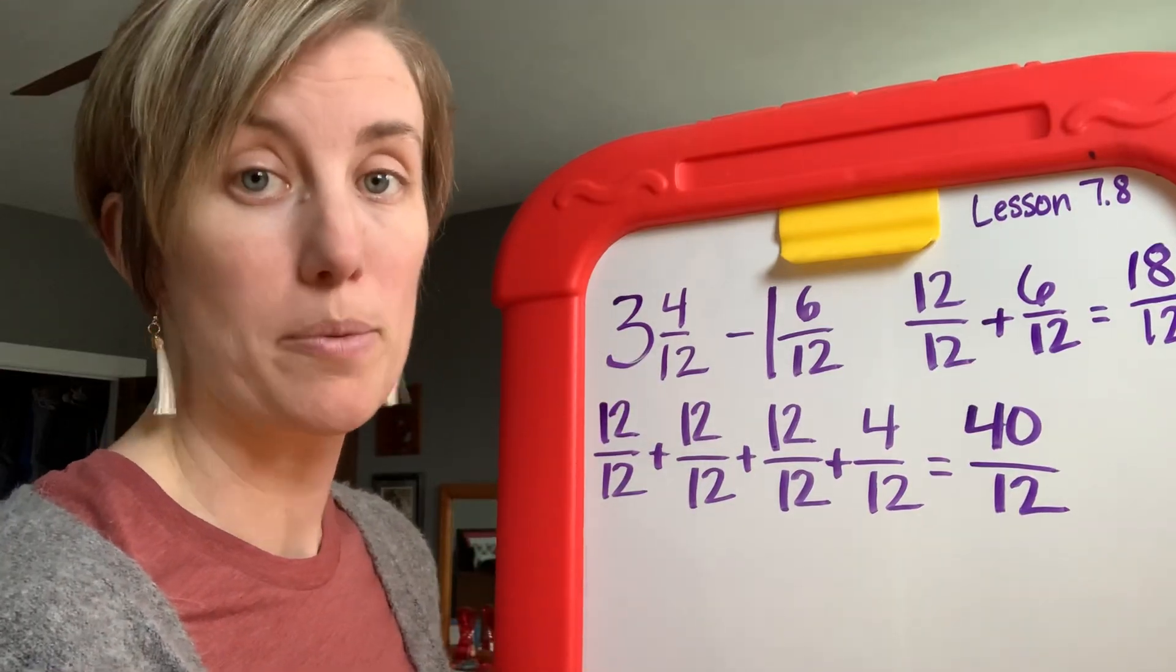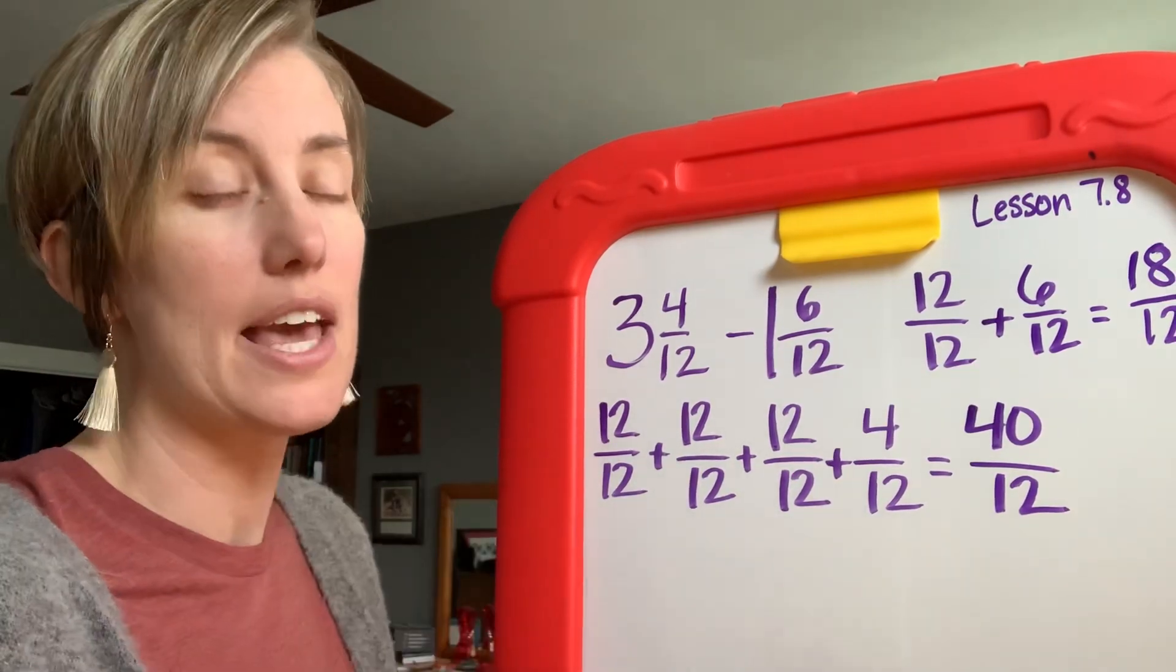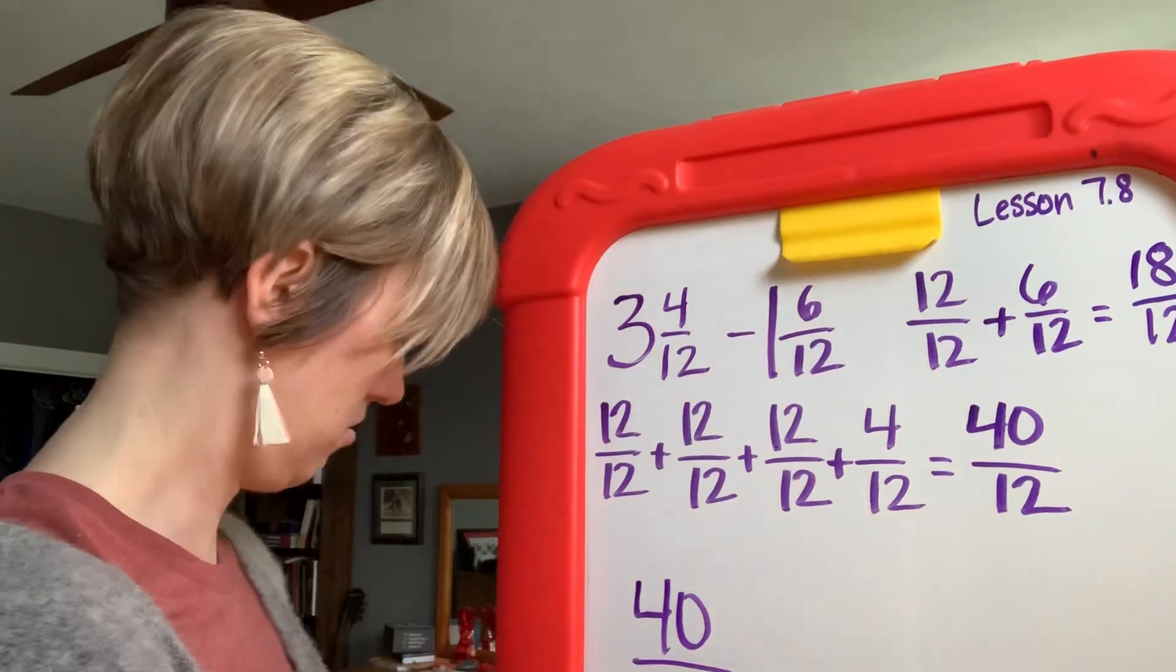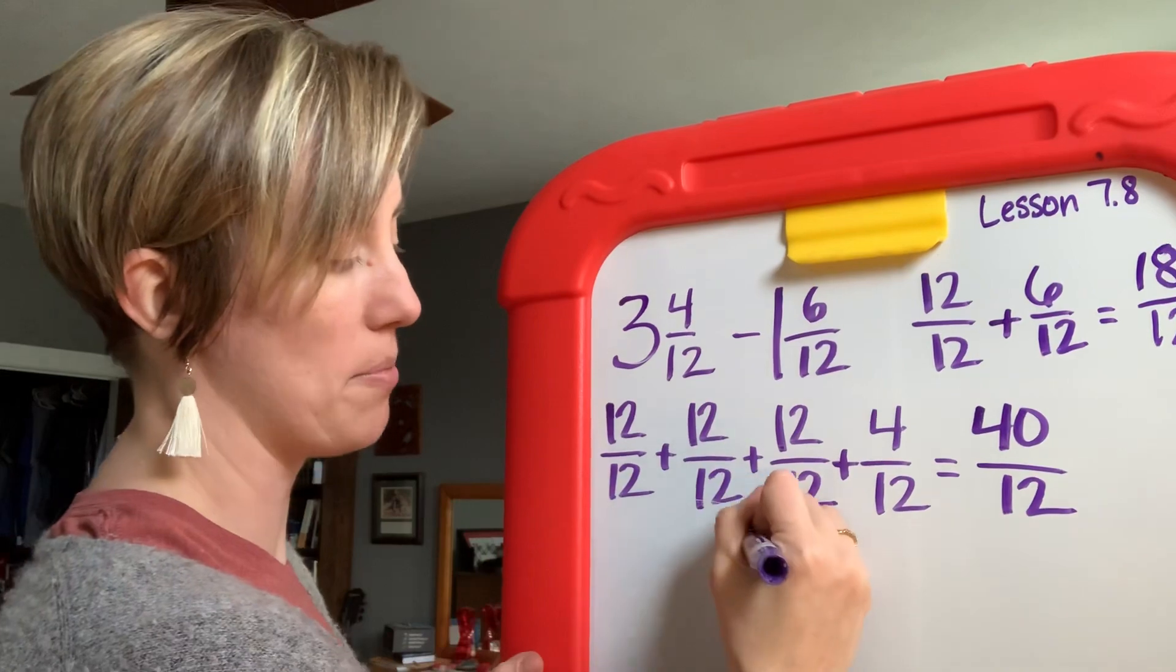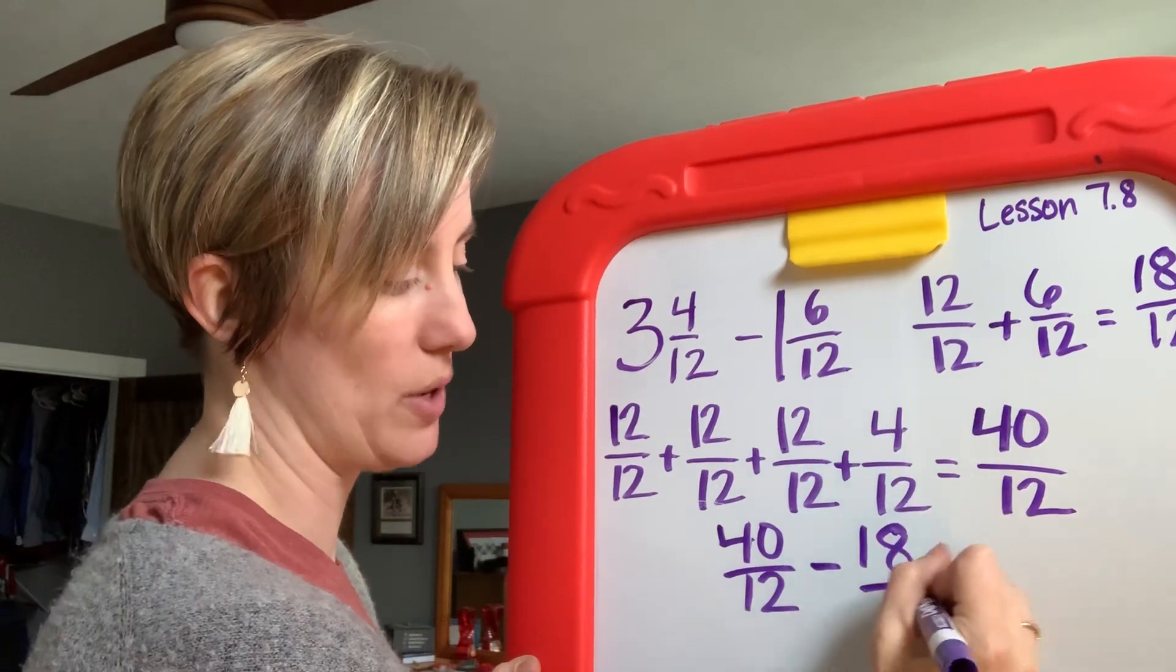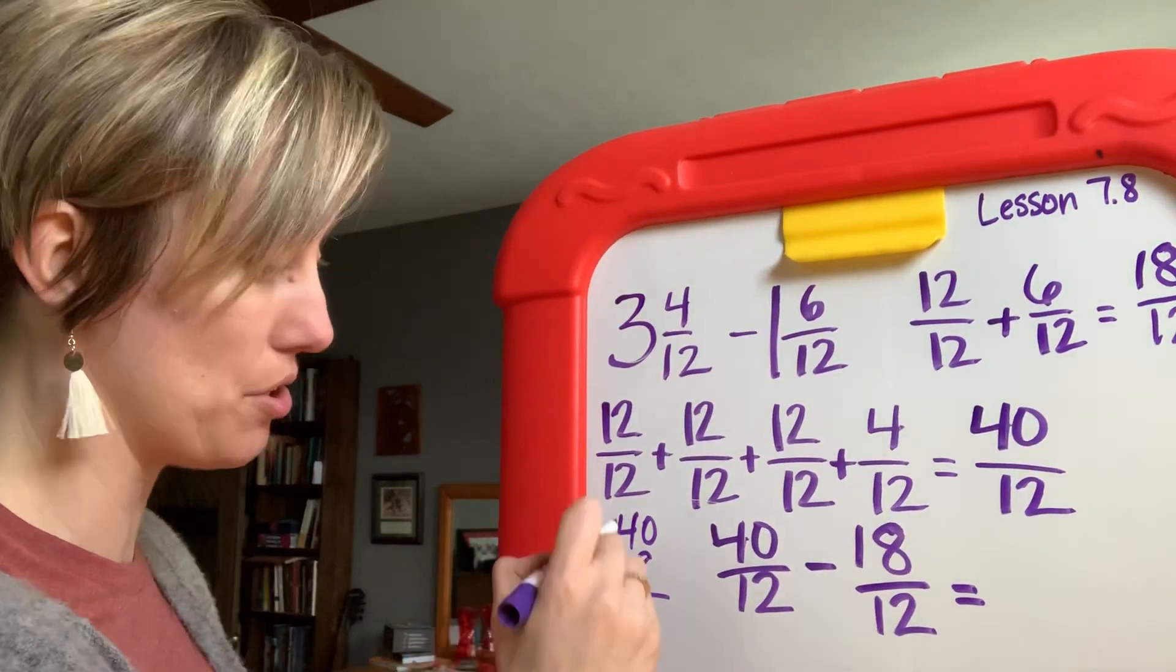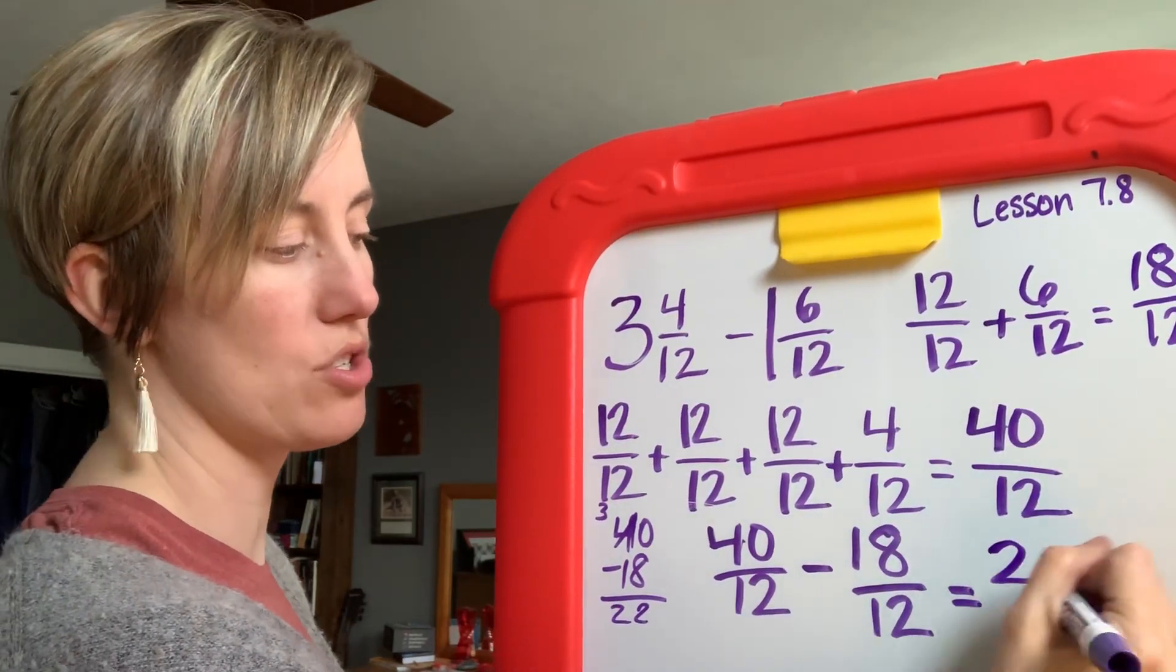All I'm doing is renaming these fractions in such a way that they can actually be usable. Okay, these are no good to me, this doesn't work, this doesn't make anything possible. I have to rename these things. So now I'm going to take 40/12 minus 18/12. And when I do that, 40 minus 18, that is something I can do. Now it doesn't make me super happy because I have to borrow, but obviously that gives me 22/12.